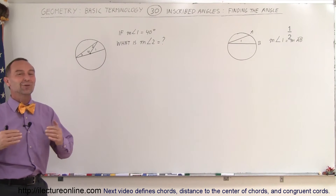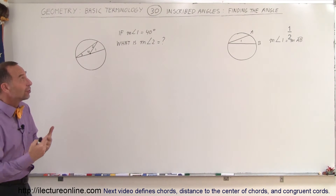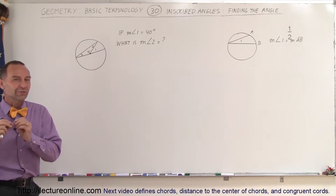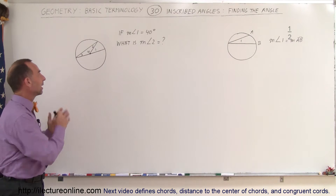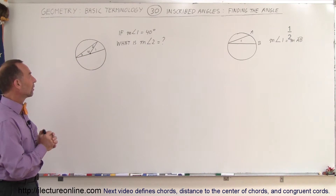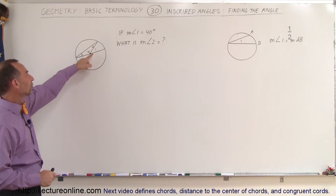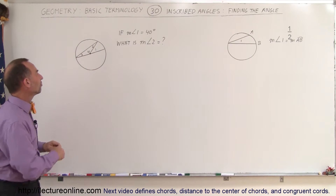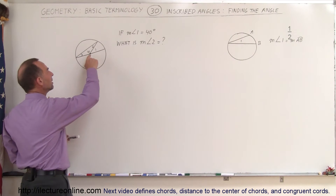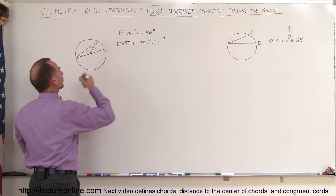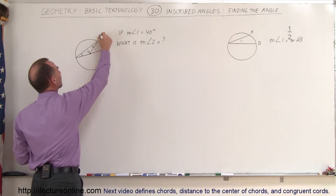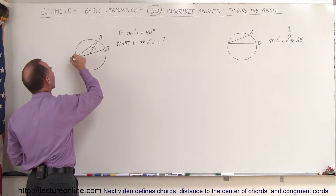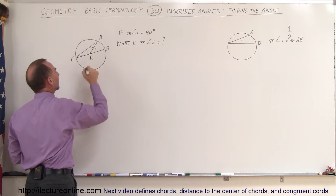Welcome to Electron Line. Let's do an example of how to use the concept of inscribed angles and finding their measure. Here we have four identified angles. We have a central angle made from the central point of the circle to points A and B. Let's call this point C and this point R.